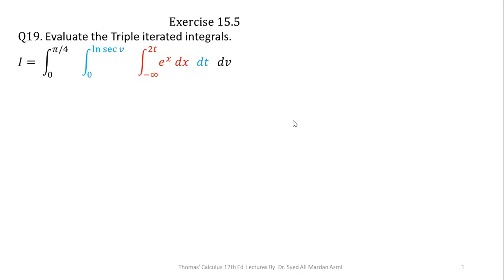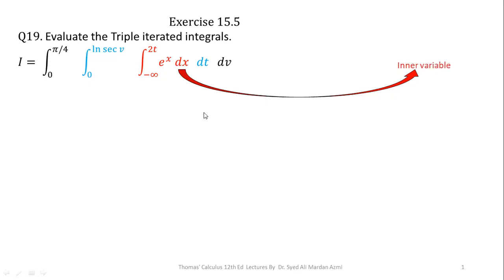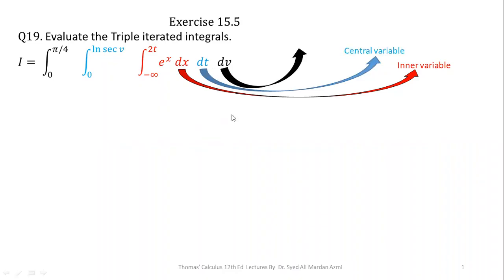Before starting to solve this question, we must know some terminologies about triple integrals. In triple integrals, we have to deal with three integrals with respect to three variables. The variable written on the most inner side with the differential is called the inner variable. The variable written in the center with d is called the central variable. And the variable written on the most outer side with d is called the outer variable. Here dx, dt, and dv are the differentials.